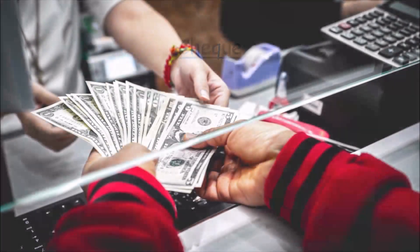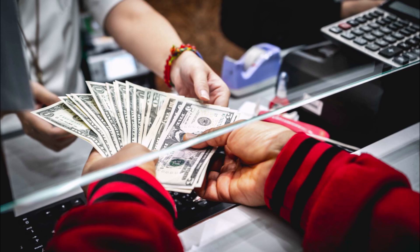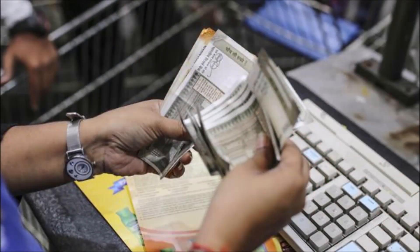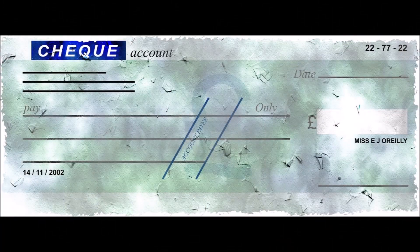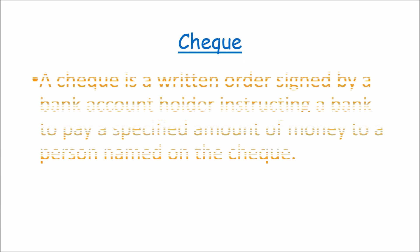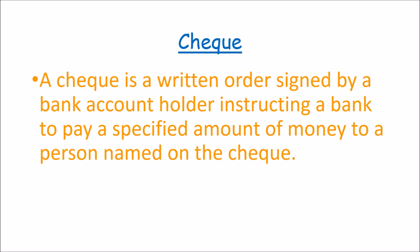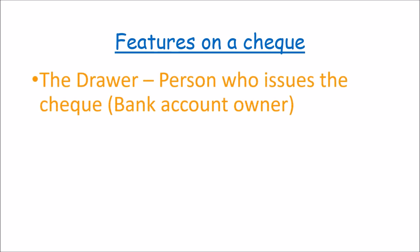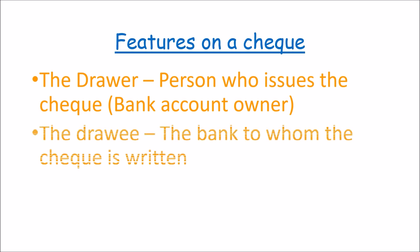Cheque. If I have money in the bank and I need to pay someone, instead of first withdrawing the cash from the bank, I could still tell the bank to pay this person on my behalf. In order to do this, I write what we call a cheque. A cheque is a written order signed by the bank account holder, instructing a bank to pay a specified amount of money to a person named on the cheque. The cheque involves three persons: the person who raises the cheque — the bank account holder — technically known as the drawer; the bank to whom the cheque is written, known as the drawee; and the person to whom the cheque is payable, known as the payee.